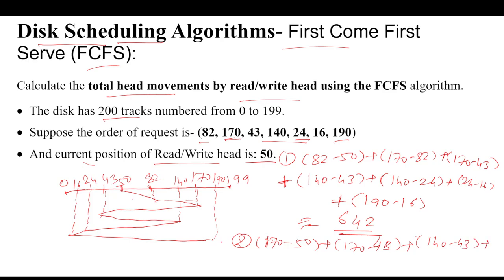From 140 we visited 16, that means 140 minus 16. Plus from 16 we visited 190, so 190 minus 16. See how many calculations were there in the first step - 1, 2, 3, 4, 5, 6, 7. And here 1, 2, 3, 4, 5. So two steps are less, and the answer is the same - 642 are the total head movements by the read/write head.